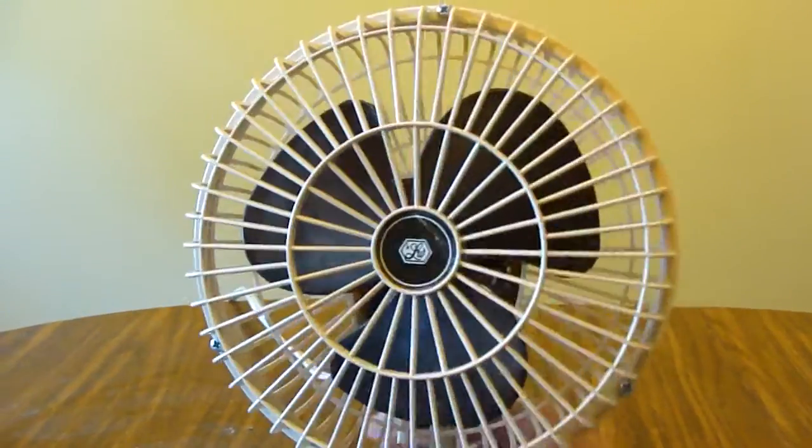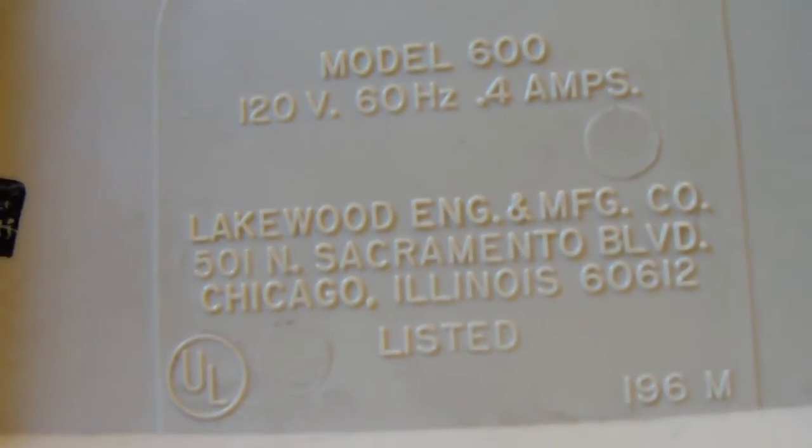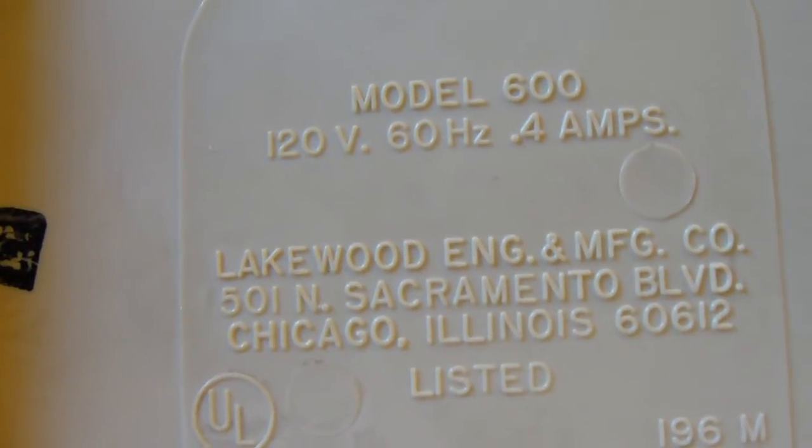See that? That's all that matters. And you know what else matters? This down here. Look at what this says. Lakewood Engineering Manufacturing Company, et cetera, et cetera. Model 600. So,